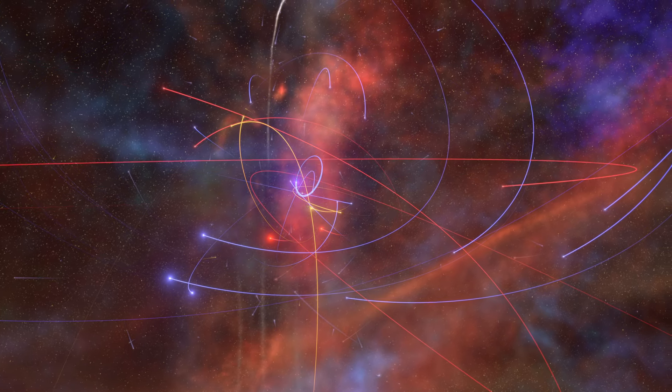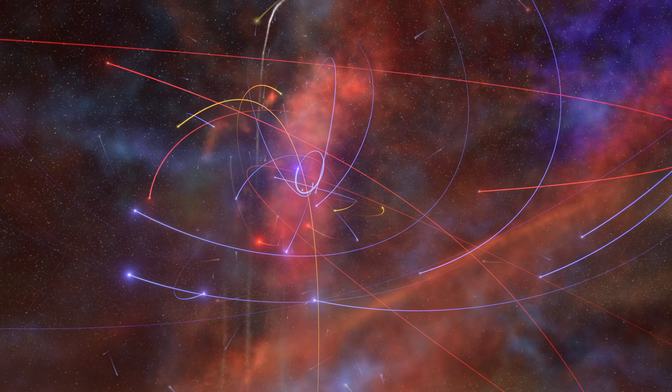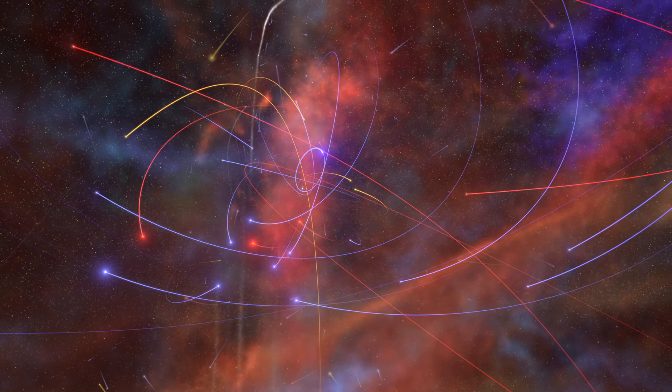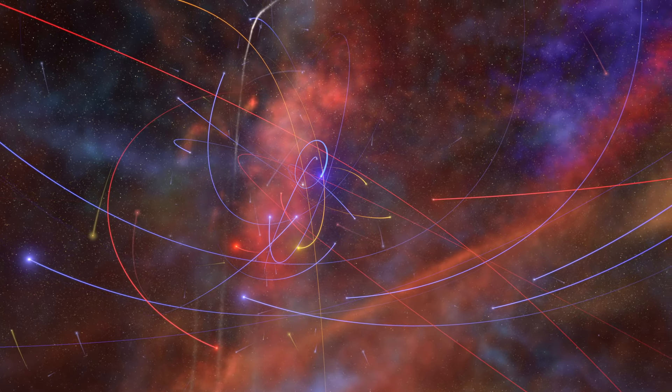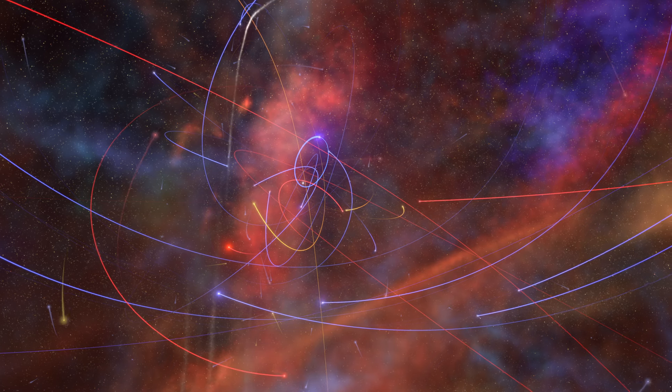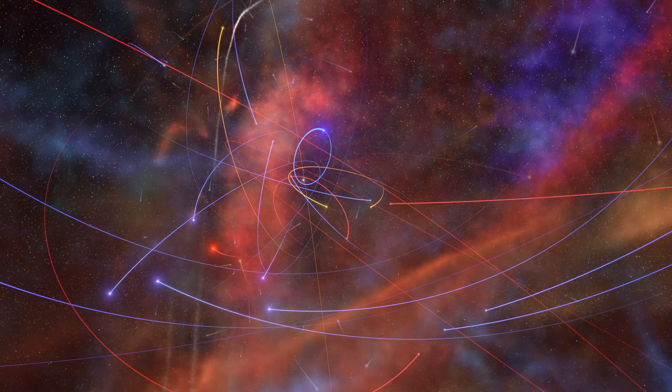Judging from the orbit of these objects, their center point must be massive, 4 million times our sun's mass. This could only be a supermassive black hole.